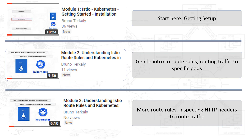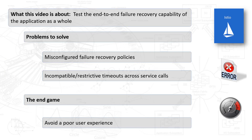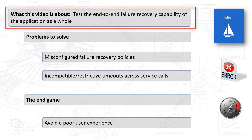Before diving into module four, be aware that there are three previous modules. Module one is an introduction covering getting set up, installing Istio, and installing the BookInfo sample app. Module two is about route rules and routing traffic to specific pods. Module three covered inspecting HTTP headers to direct traffic to specific version numbers of the review service. This video is really about testing the end-to-end failure recovery capability of the application as a whole.